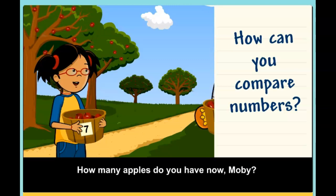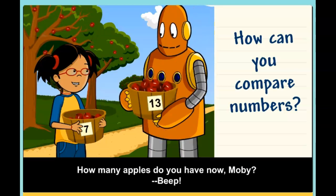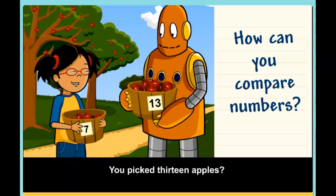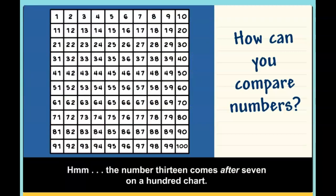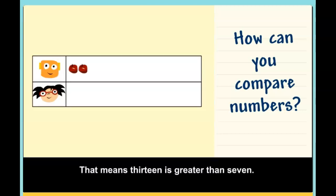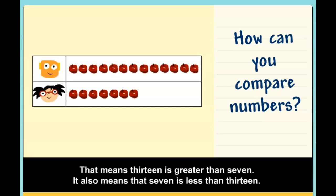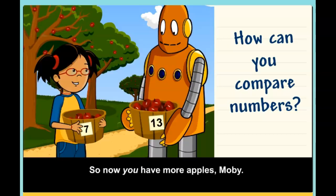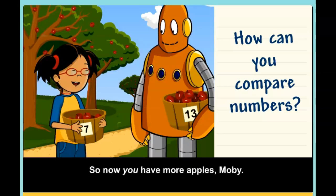How many apples do you have now, Moby? You picked 13 apples? Hmm, the number 13 comes after seven on a hundred chart. That means 13 is greater than seven. It also means that seven is less than 13. So now you have more apples, Moby.